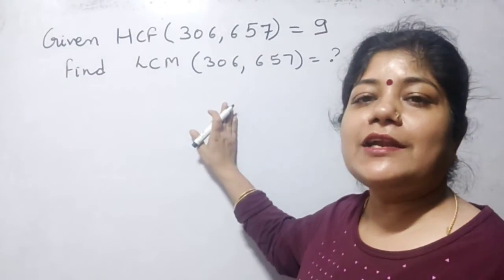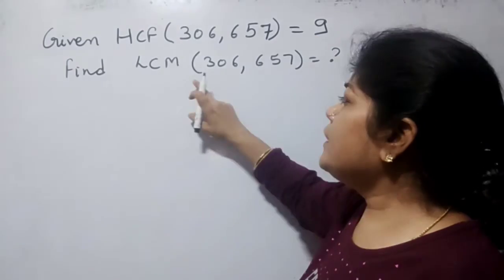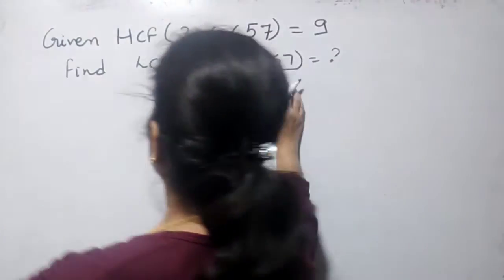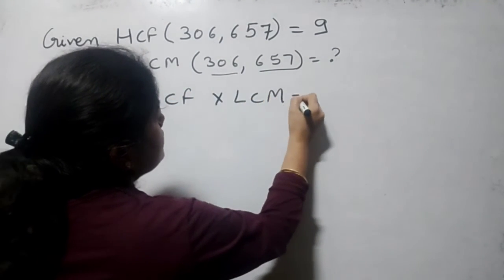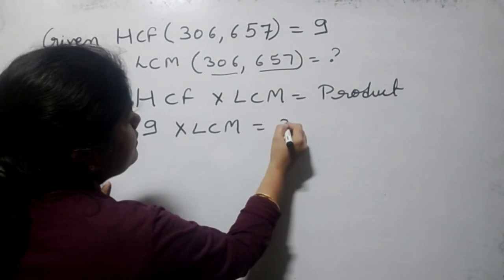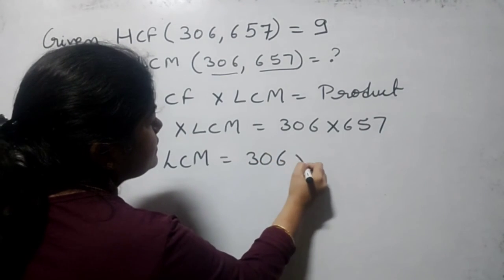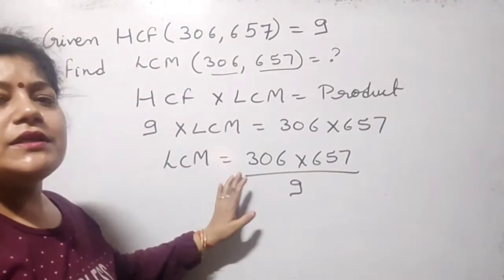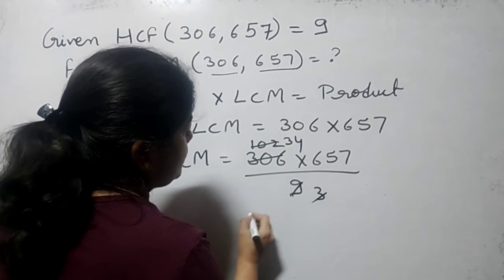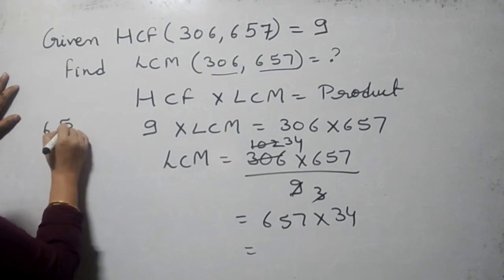Now let's study how we apply that formula in these types of questions. For example, the question is given as: HCF of 306 and 657 is 9, and we have to find the LCM of these two. We can easily see these are the two numbers: 306 and 657. Using the relationship HCF × LCM = product of numbers, and HCF is 9, we divide 306×657 by 9 to find LCM. So 306 ÷ 9 = 34, giving us 657 × 34.